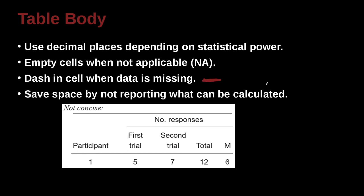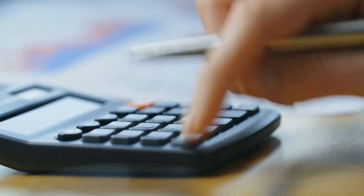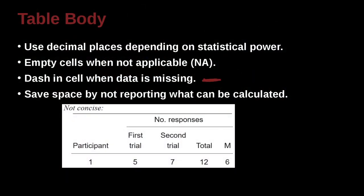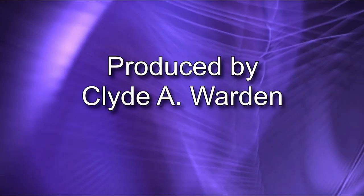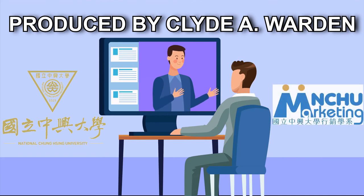Save space by not reporting what can be calculated. So if there are numbers that can be calculated by the user, by the reader, you do not need to also report those. For example, totals and sums and subtotals. Don't add all those things if people can just take a calculator and do it themselves.